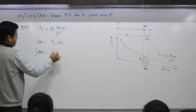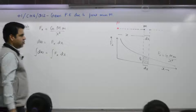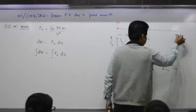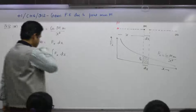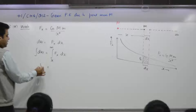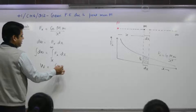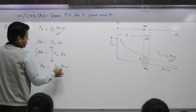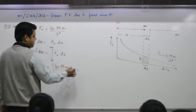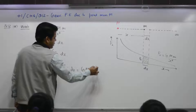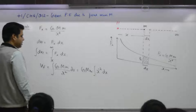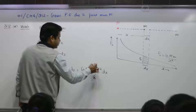Total work done — integrate both sides. You get the total work done in moving the object from x to infinity, so the limits are x to infinity. Total work done equals the integral of GMm over x squared dx, with limits from x to infinity.